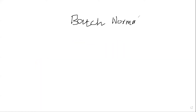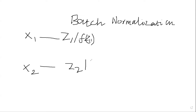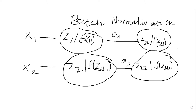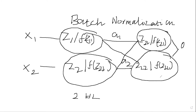In this video, let us discuss batch normalization — a very important concept to understand. Let me draw the diagram and explain. Here we have two hidden layers and one input layer with two input neurons, and here is the output. There is one hidden layer here and a second hidden layer here.